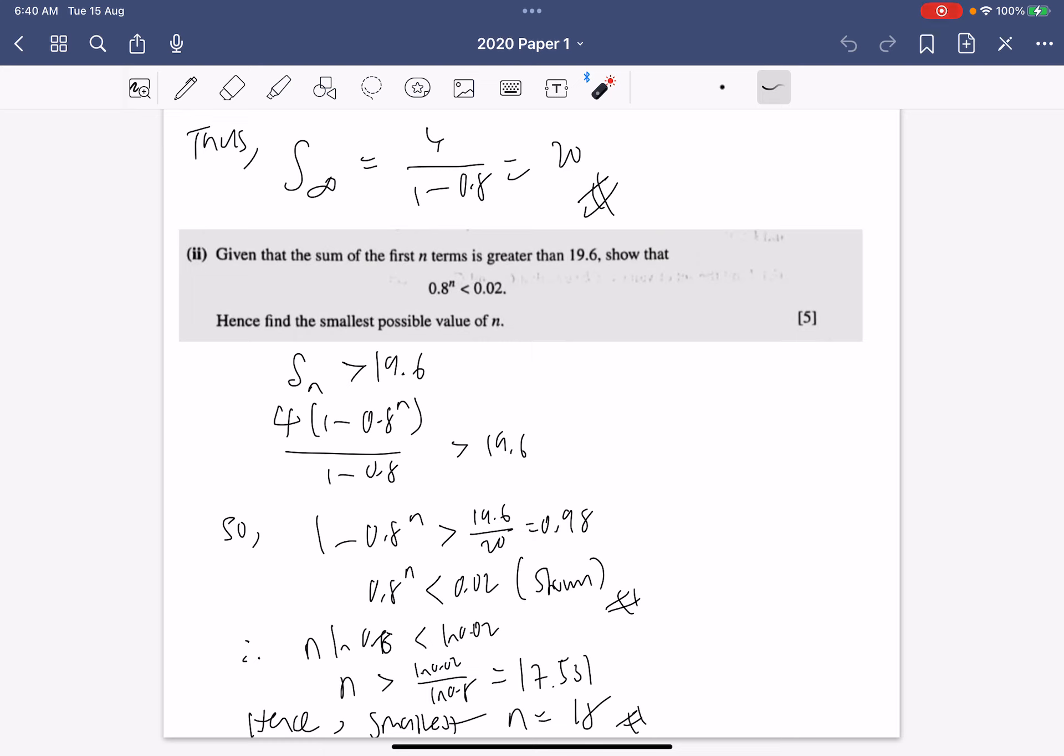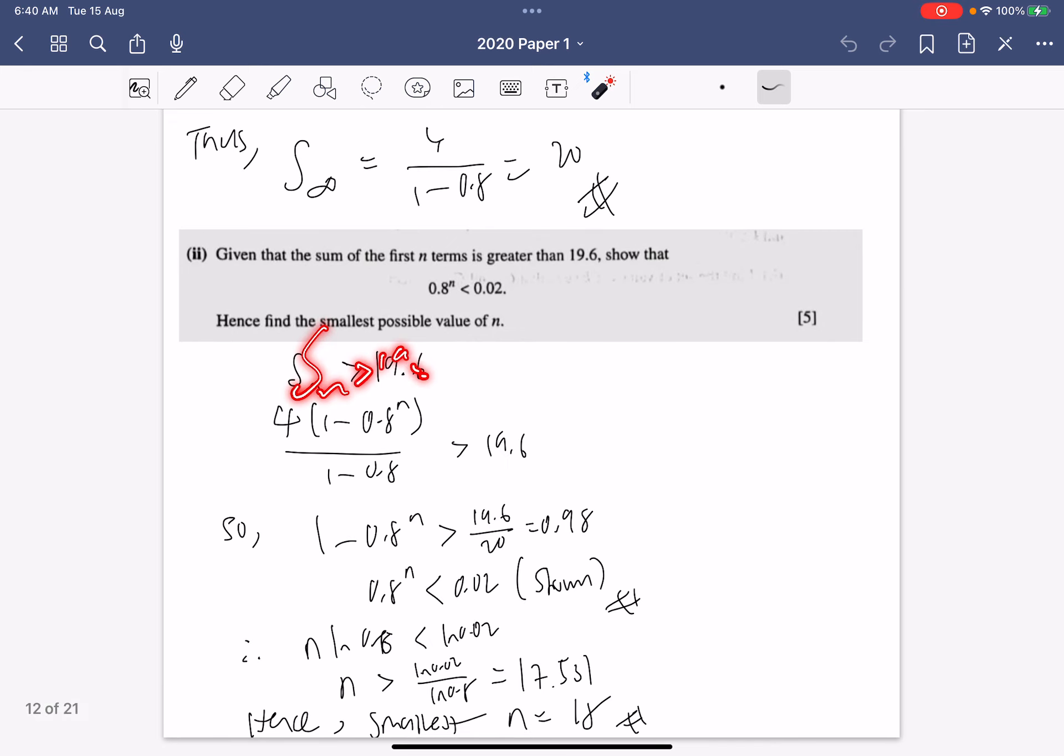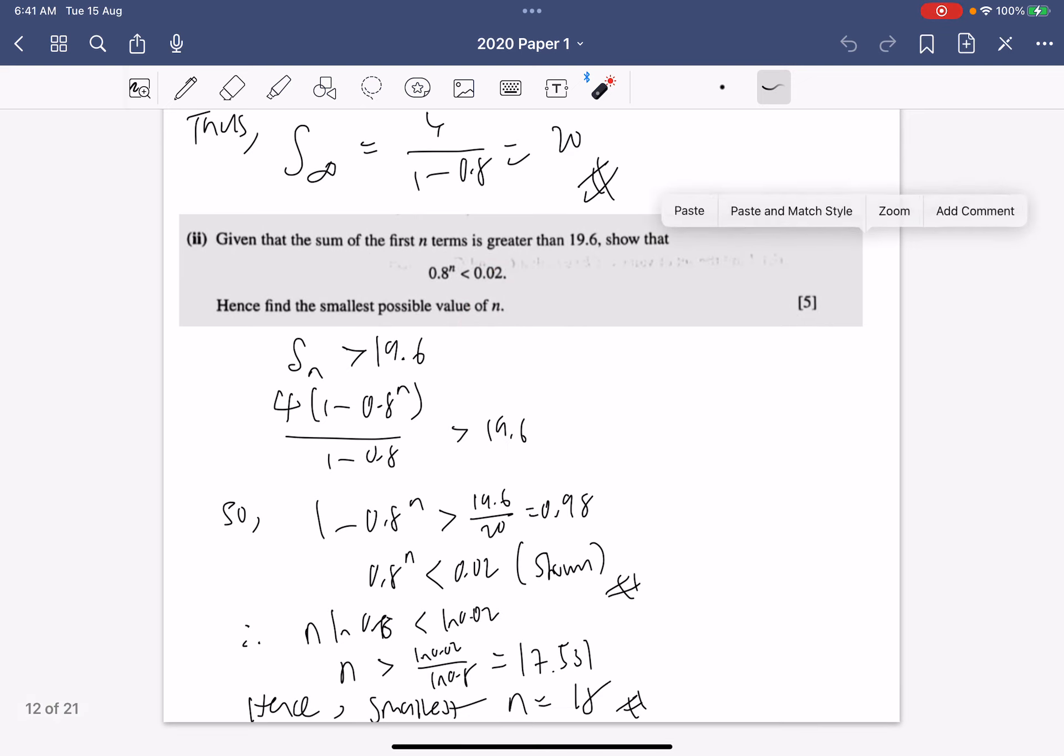We're supposed to show that 0.8 to the power n is less than 0.02. So we just put Sn to be greater than 19.6, we use the Sn formula which is a bracket 1 minus r to the power n divided by 1 minus r. And we get this whole portion is 20, so you just divide by 20 over here, so that's 0.98. Then we just bring this over, switch over, so 0.8 to the power n must be less than 1 minus 0.98 which is 0.02, like we have shown.